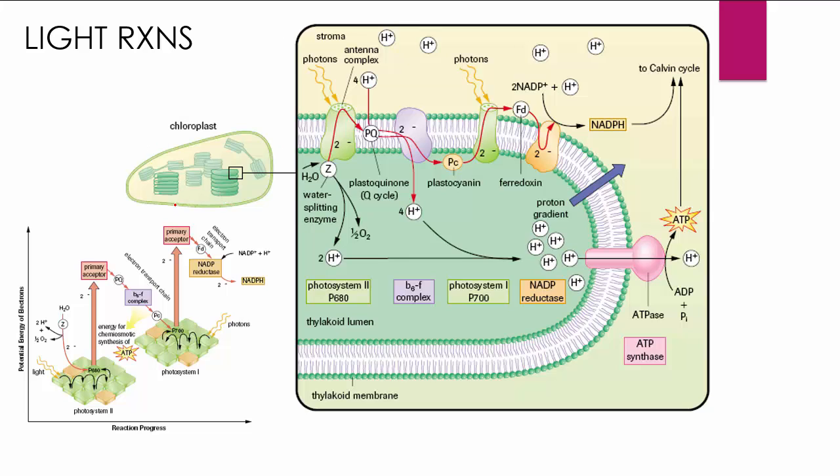So here's a chloroplast, and this region right here, that's going to be the stroma. That's going to be for the next section, the dark reactions or the light independent reactions. But this right here, that's called a granum right there. And one of these little discs is a thylakoid. And as you can see, there is a stack of these thylakoids that makes up a granum.